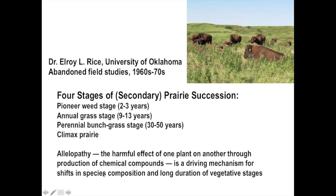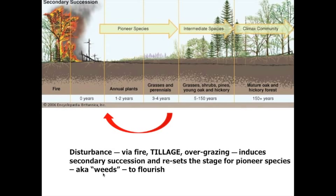Here's secondary succession — a forest fire resets the stage of succession. Any kind of disturbance, such as fire, especially tillage in cropland and agriculture, overgrazing, or drought, can induce a secondary succession and reset the stage for pioneer species — in other words, weeds — to start flourishing.